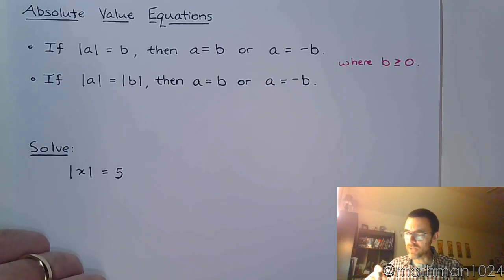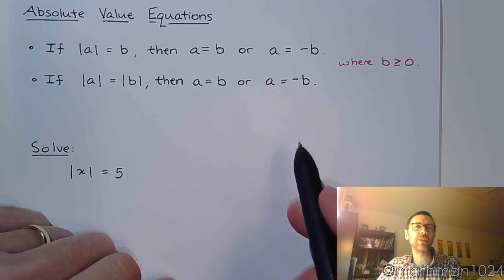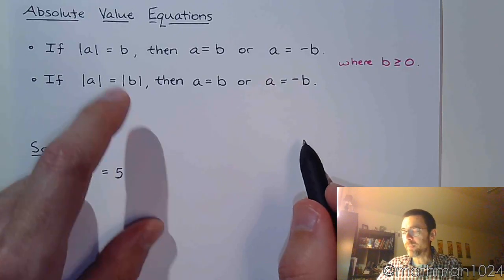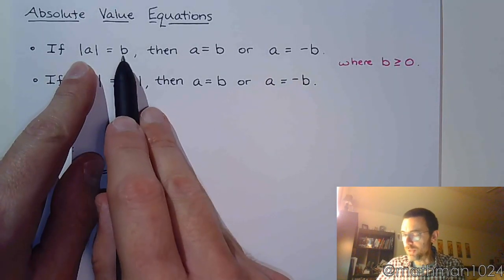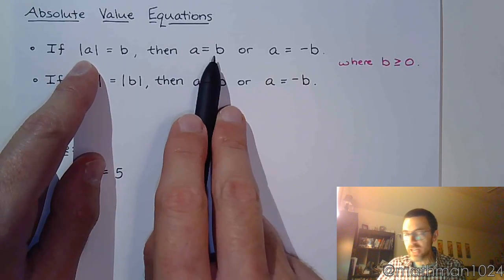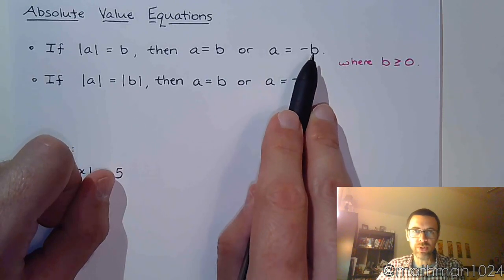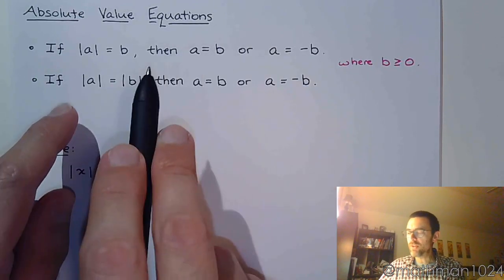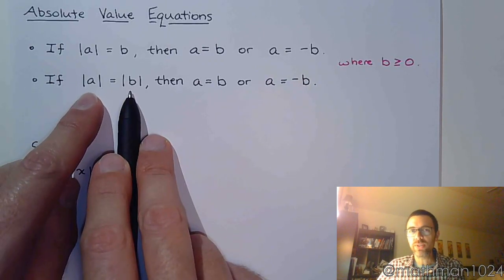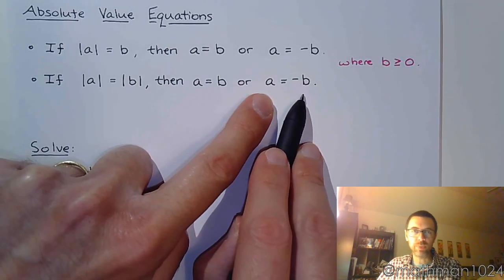As long as we have a non-negative value of b, here are two major statements about how we set up and solve absolute value equations. If you have an absolute value equal to a number, then the only way you get this number is if the expression inside equals that number, or if the expression inside equals the opposite of that value. And if we have two absolute values that are equal to each other, the only way this can happen is if these are the exact same number, or if they are opposites of each other.